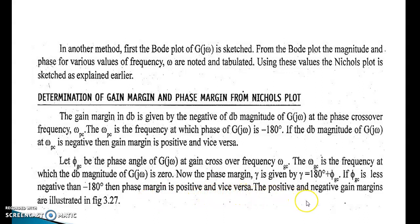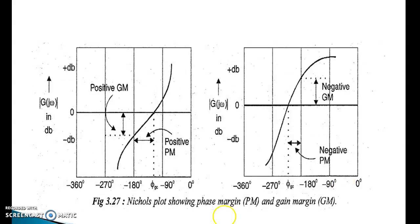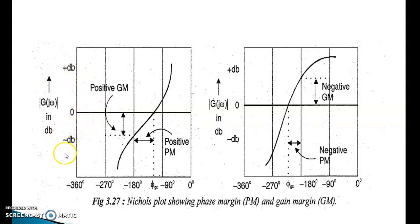The positive and negative gain margins are illustrated in figure 3.27. This is the graphical representation of φ_Gc versus G(jω) in decibels. This is the zero origin line — upward values are positive dB and downward values are negative dB of G(jω) magnitude. This is the reference line, and this region indicates positive gain margins.